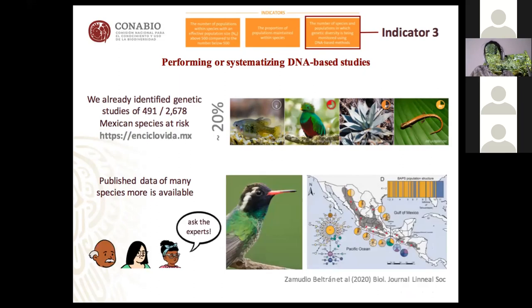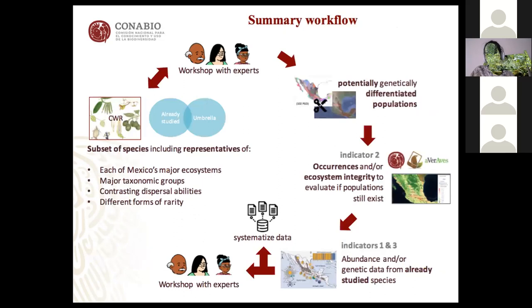The fact that there's already a lot of data out there means we can choose species to be more informative — not only telling us how the species is doing, but how species of that ecosystem are doing in terms of conservation of populations and genetic diversity. The workflow proposed in Conabio focuses on crop wild relatives on one hand, and other entirely wild species not related to agriculture on the other — species that could serve as indicators or umbrella species for each ecosystem with already well-listed data. There is a need to interact with experts in population genetics and phylogeography and all taxonomic groups, and to systematize the data already out there.